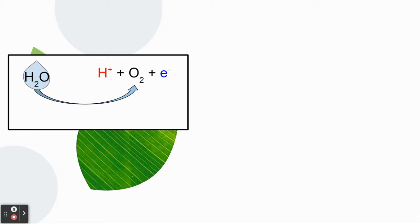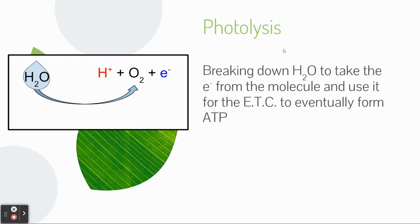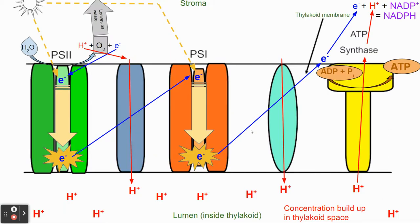Here we have the process of water splitting into the hydrogen proton, the oxygen, and the electron. This process of using light to break down water is called photolysis. On your picture where you have water splitting, please write the word photolysis. Essentially, it means taking water and breaking it into those three molecules to use for what we call the electron transport chain. Photo meaning light, lysis meaning breaking.